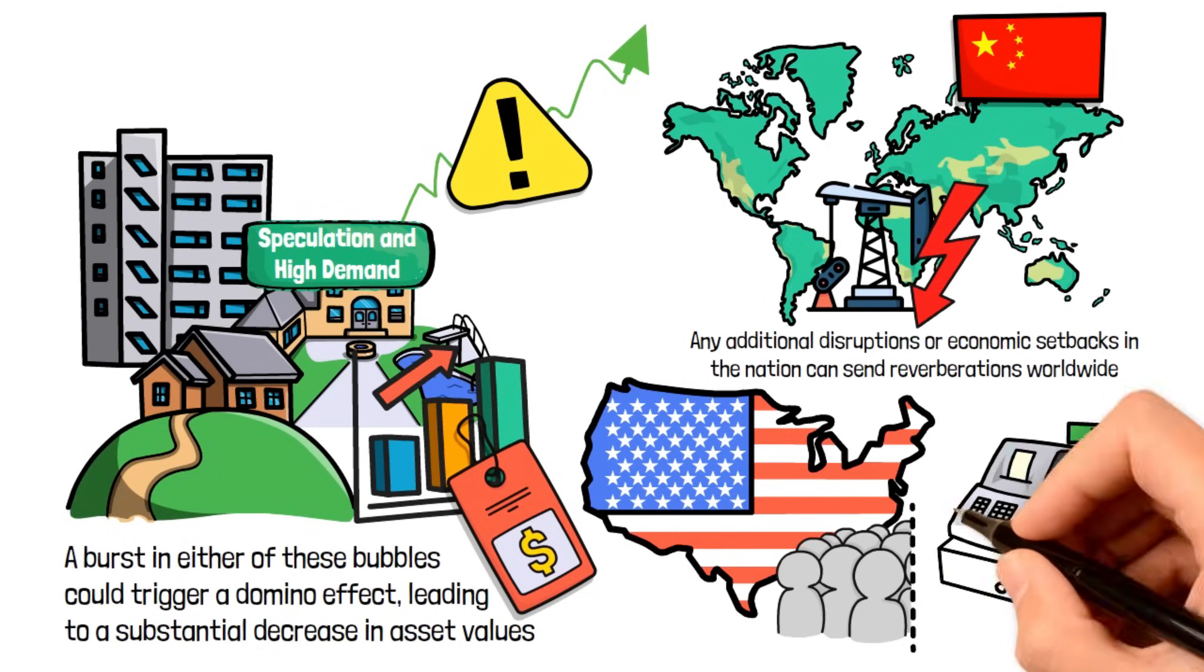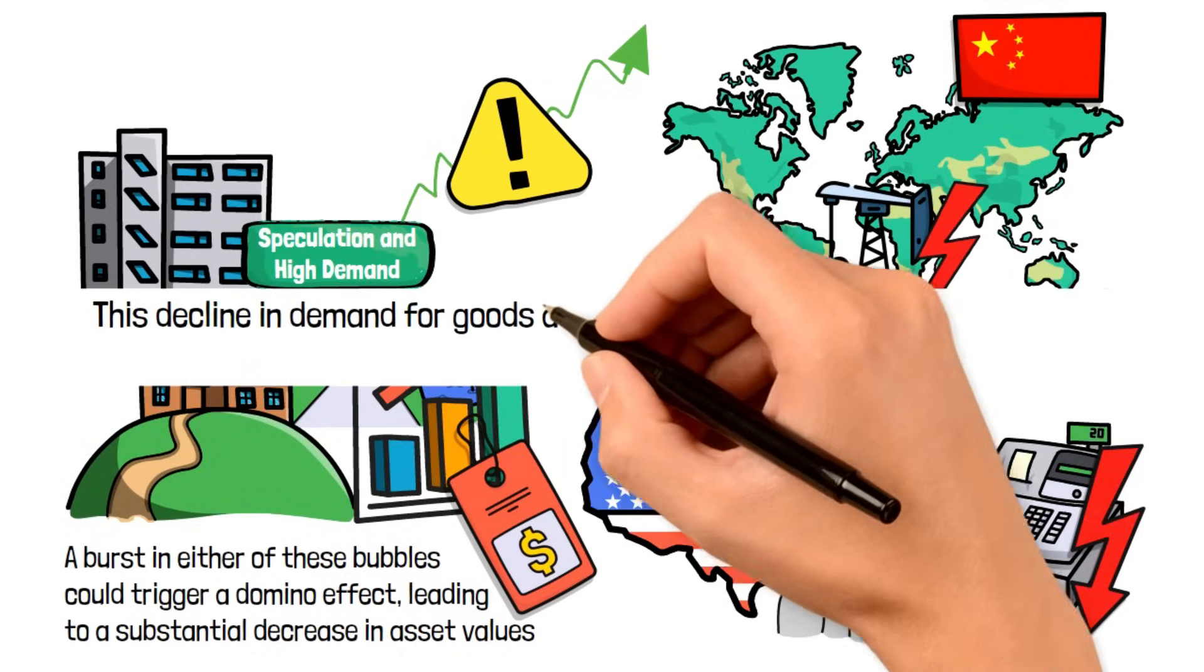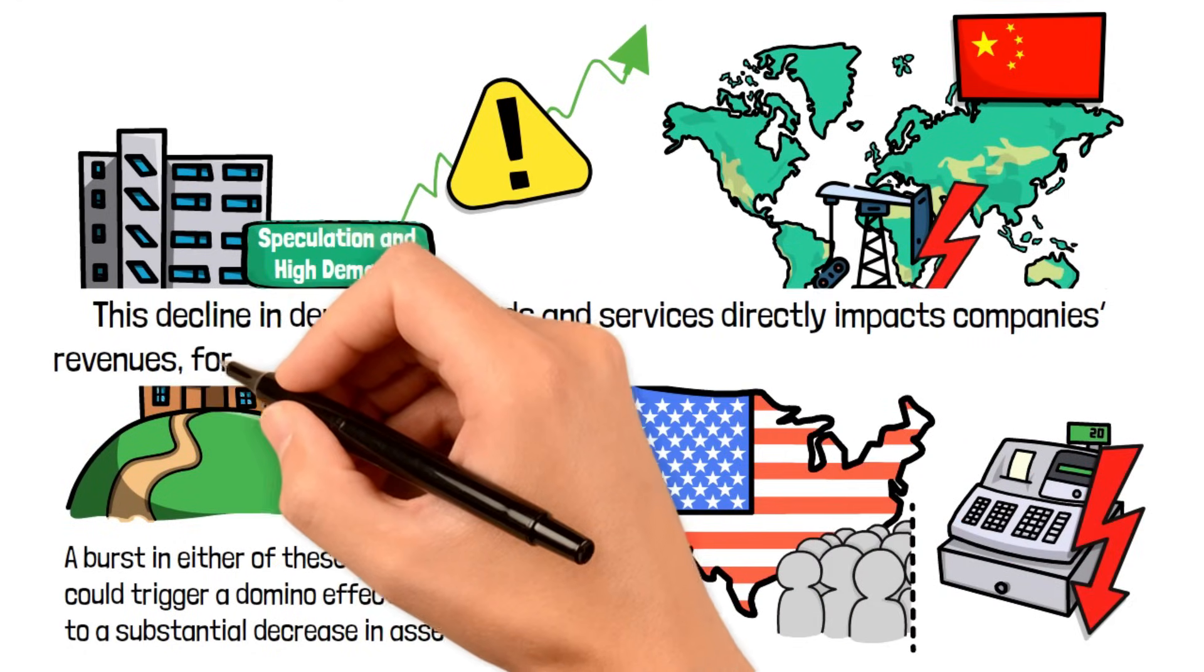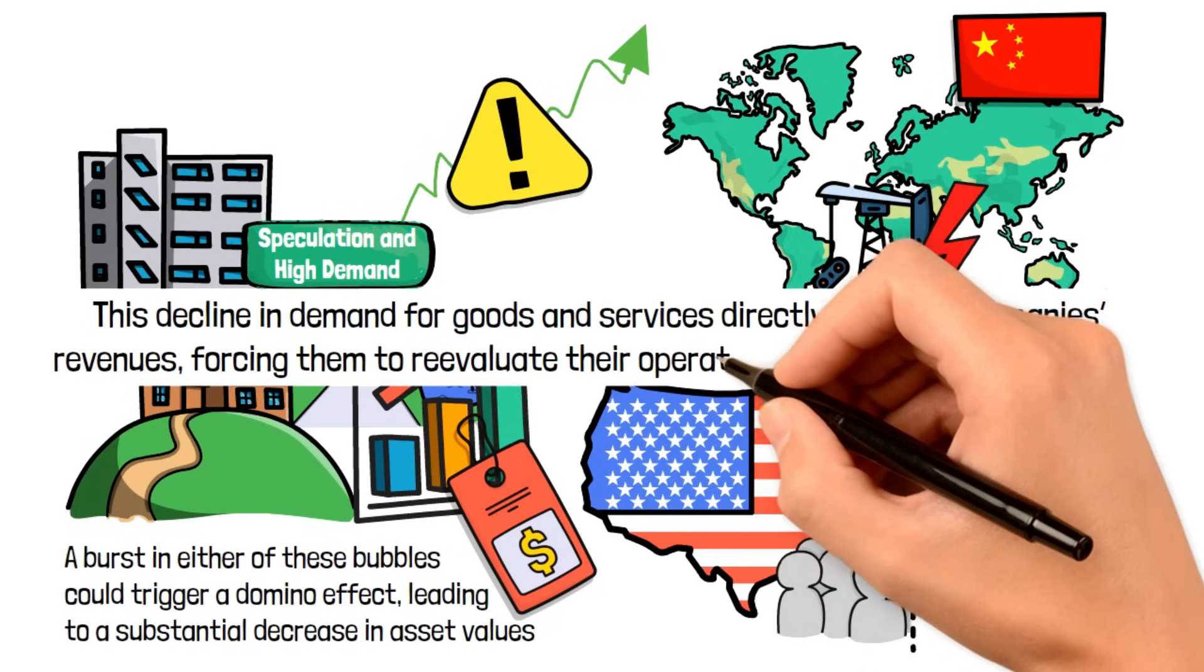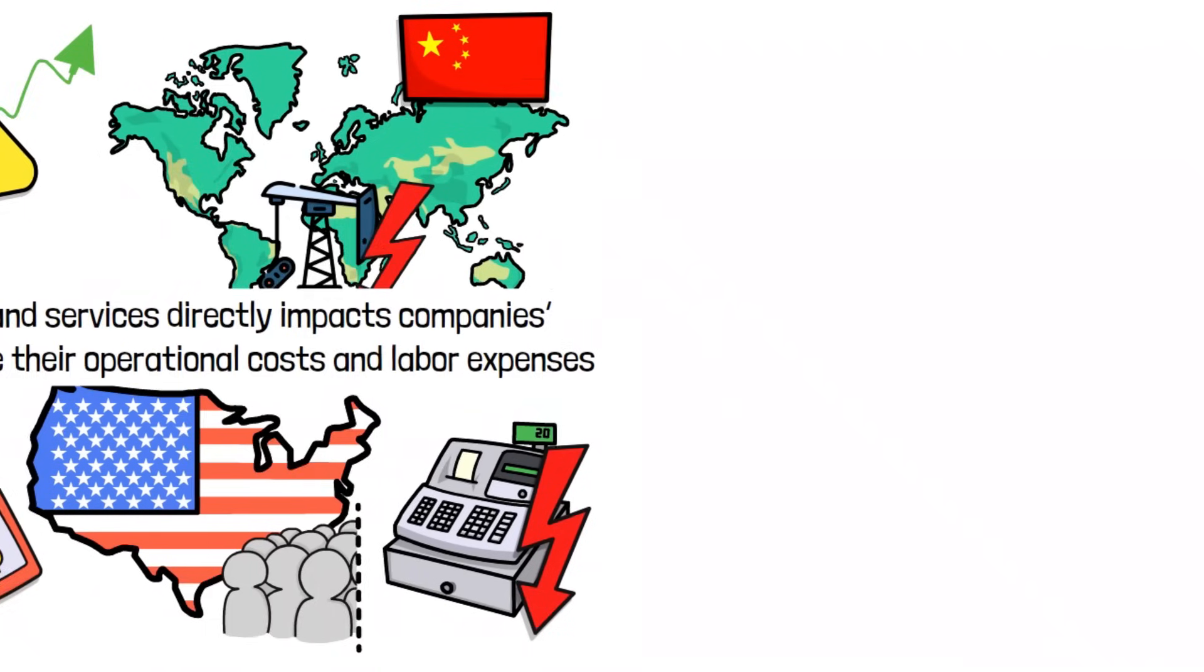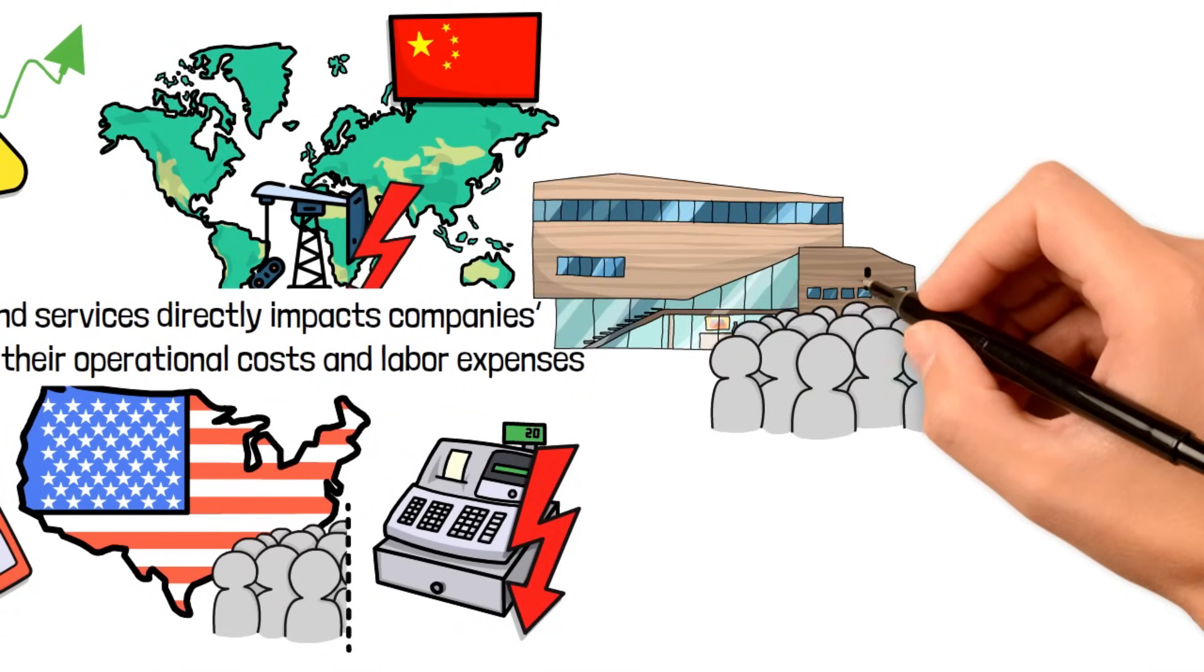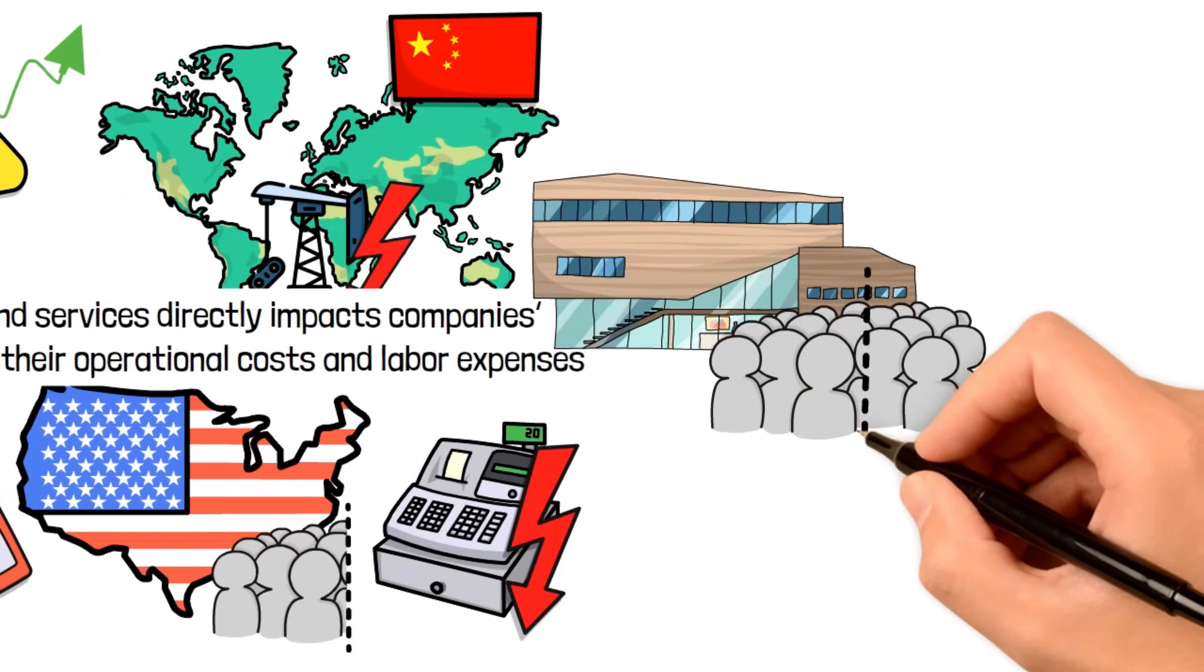When the economy contracts, businesses often experience reduced consumer spending. This decline in demand for goods and services directly impacts companies' revenues, forcing them to re-evaluate their operational costs and labor expenses as cost-cutting measures to maintain profitability and keep the business afloat. And, of course, one of the quickest ways to do this is by simply laying off employees.